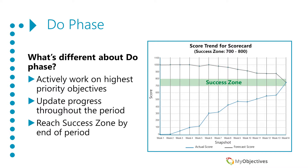In this picture of the success zone, that green bar running across the graph represents the team having achieved an actual score of between 700 and 800 points. We will be talking more about this in greater detail in future lessons.